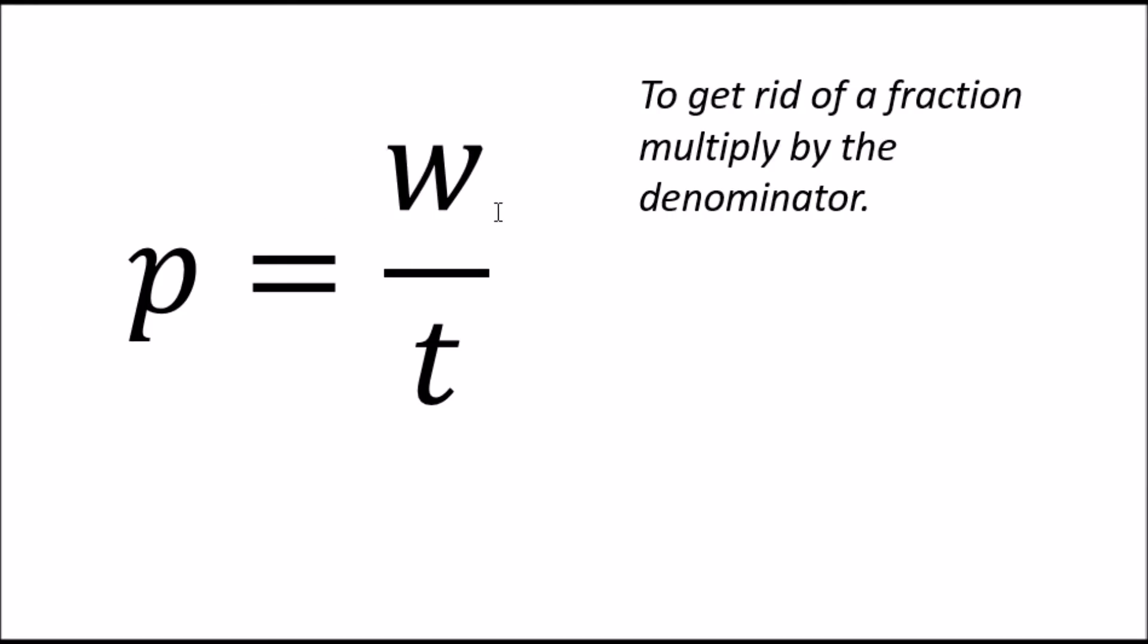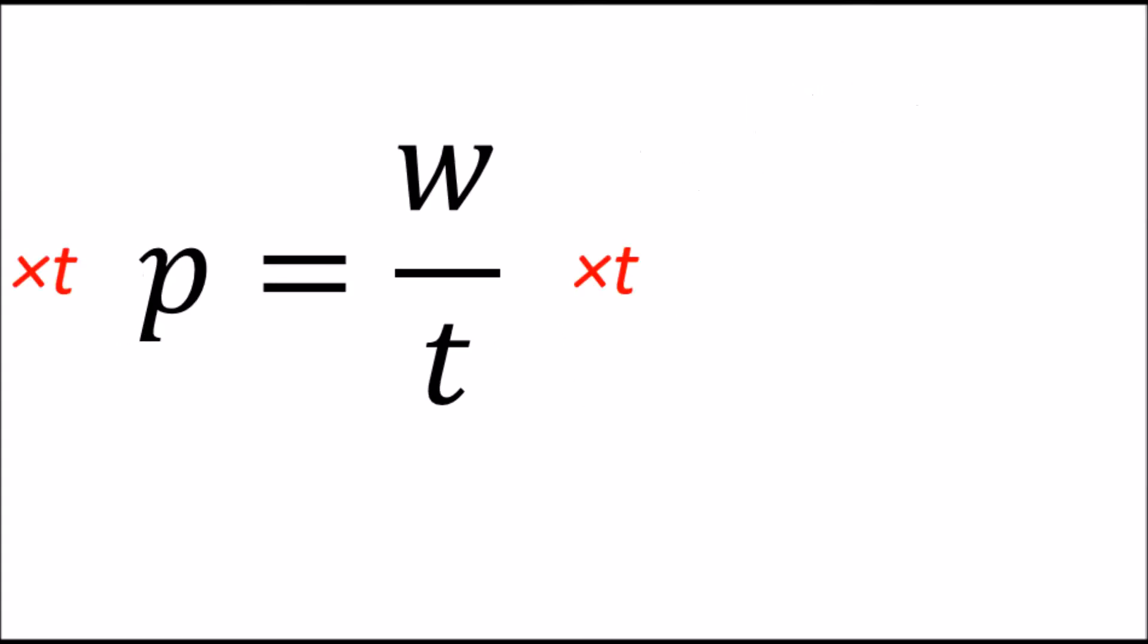We're looking for work here. We want to get work on its own. What's happening to work? It's been divided by t. And the rule here is, with a fraction, if you want to get rid of a fraction, you multiply by the denominator. So let's do that. Let's multiply by the denominator. We've got multiply by t on both sides, t's cancel out, and you're left with w on its own is equal to p times t. Work is power times time.